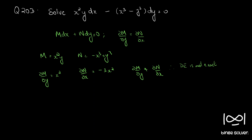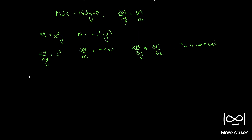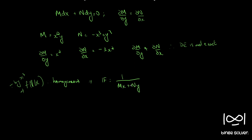If you observe, x squared y and x cubed minus y cubed — this whole equation is homogeneous. If you divide throughout by x cubed you can write the differential equation as a function of y/x divided by x cubed. So the equation is homogeneous. Since the equation is homogeneous, we can find the integrating factor by using 1 by Mx plus Ny.